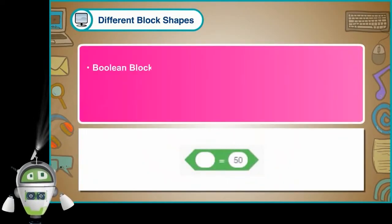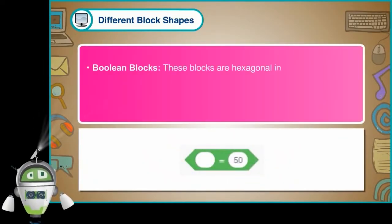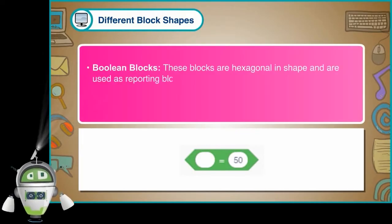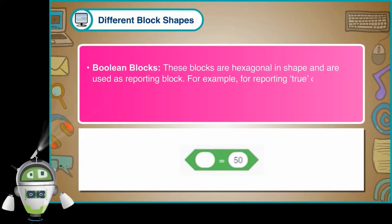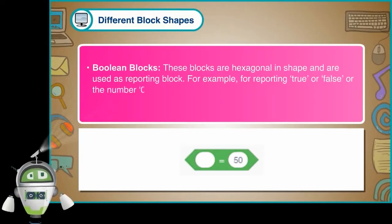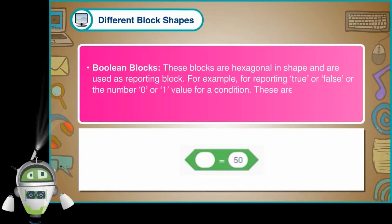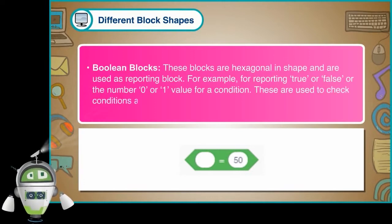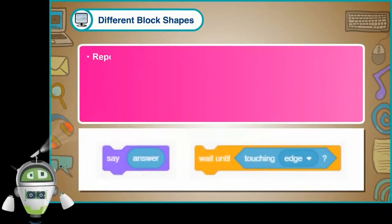Boolean Blocks: These blocks are hexagonal in shape and are used as a reporting block. For example, for reporting true or false, or the number 0 or 1 value for a condition. These are used to check conditions and to find the length of the string.